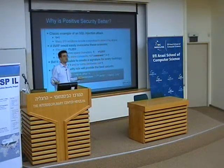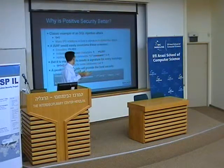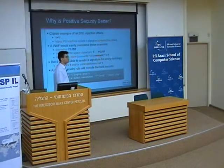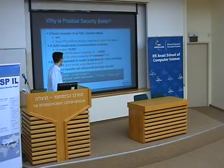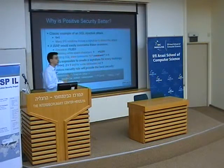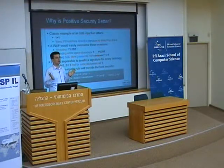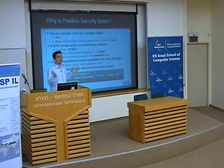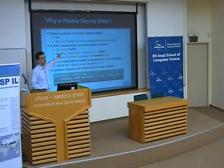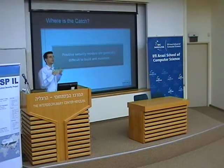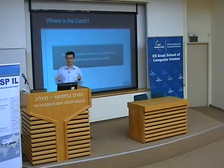So what we do instead in the positive security model is: we have this parameter — for example parameter 'username' — and this is a ModSecurity fragment that will look at one particular script called login.php and only look at the parameter called username. It will make sure that username is a word, meaning the username can only contain alphanumeric characters. So if you try to inject any of those attack strings, that will fail. This is why the positive security model is superior to the negative security model.